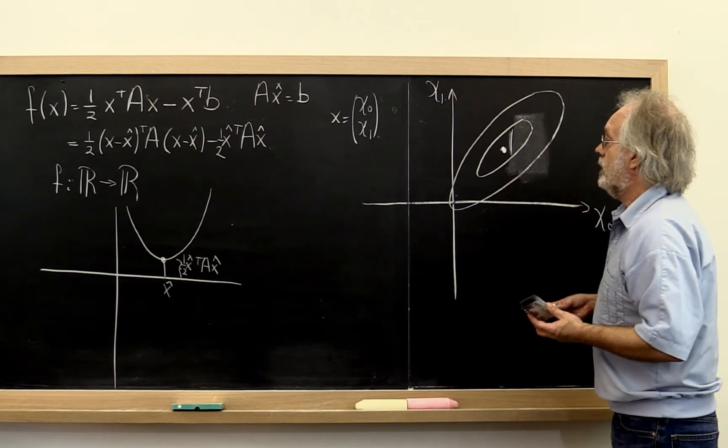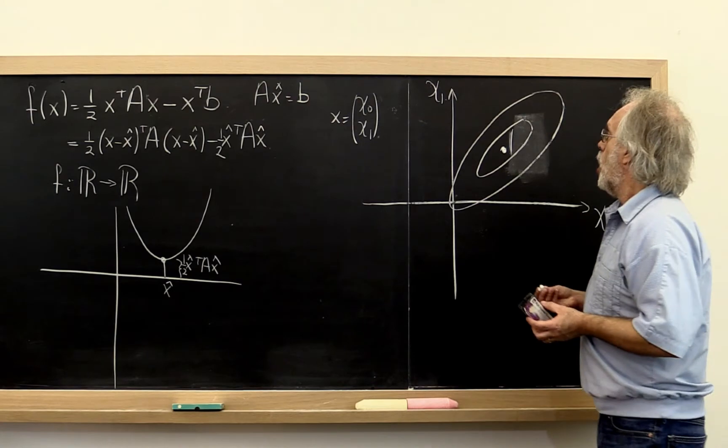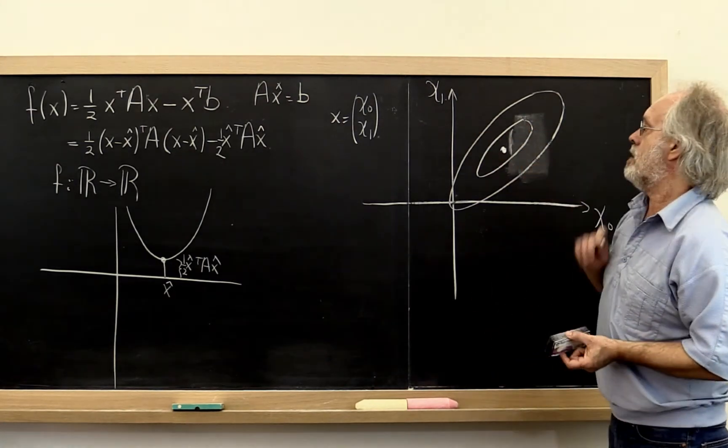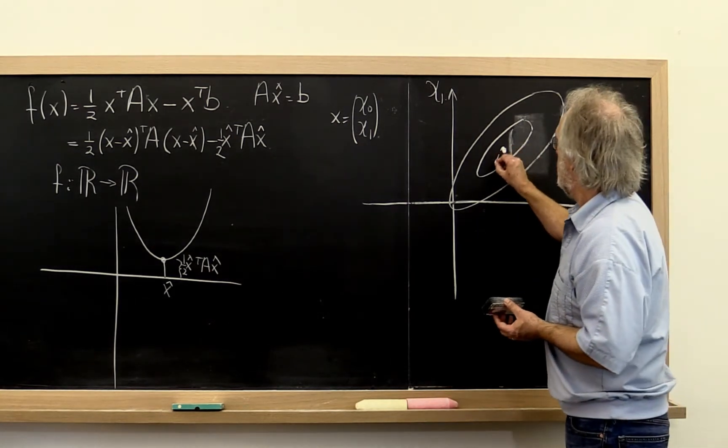Now descent methods come from the following idea. What if we have a current guess as to where the solution is? This is our point x hat.